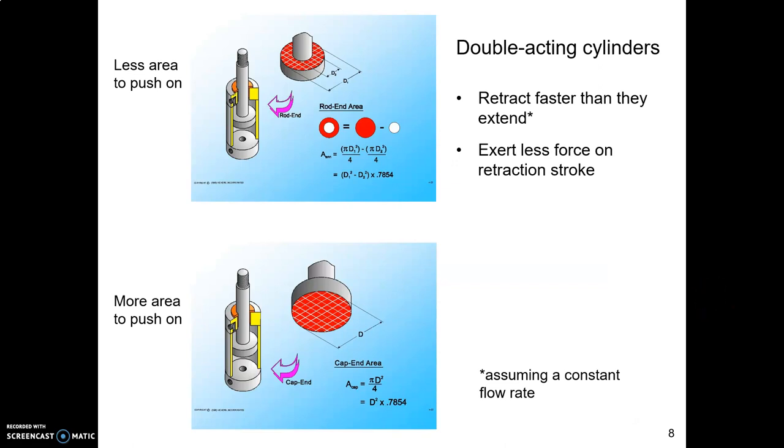Double acting cylinders retract faster than they extend, and the reason for that is the area here in the rod end is less area, so you get less volume in there. And so the same amount of oil can push the thing down faster. However, it's less force, for reasons that you might remember from a couple of weeks ago when we were looking at force and area. The main idea here is they retract faster than they extend.